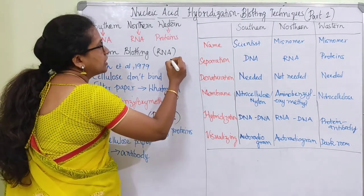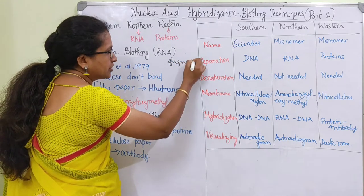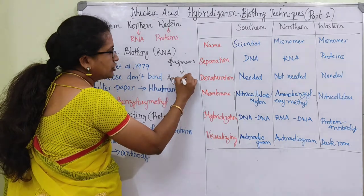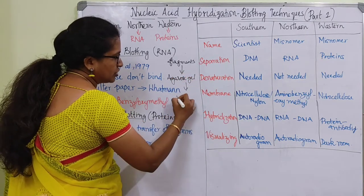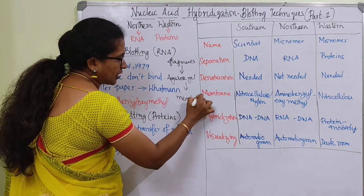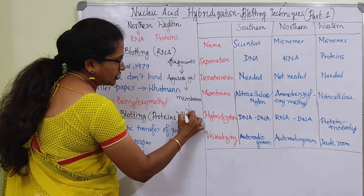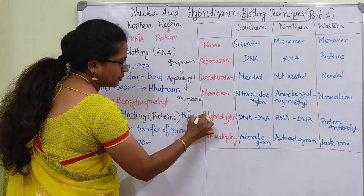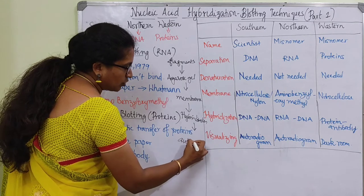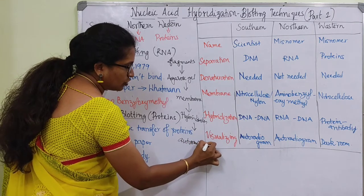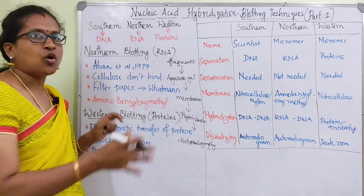First, fragments are cut and then agarose gel is run. We place the membrane and then transfer it. Then we do hybridization, then autoradiography. All these basic steps stand for all the techniques.